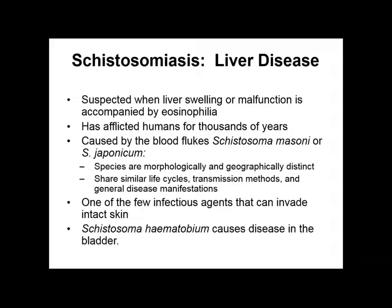This disease has been affecting human beings for thousands of years, and it's caused by a blood fluke. The blood flukes that cause this are Schistosoma mansoni and Schistosoma japonicum. These species are morphologically and geographically very distinct from each other — one has been isolated around East Asia and Japan. These helminths share similar life cycles, transmission methods, and generally have similar disease manifestations.